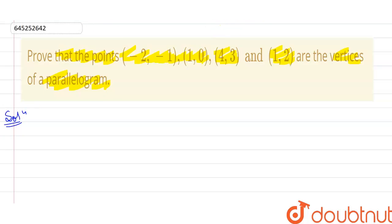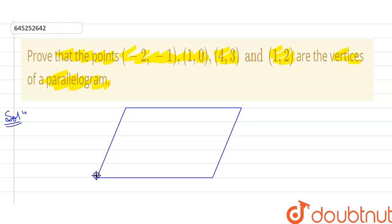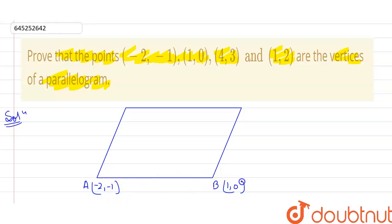Let's draw a parallelogram. This is my parallelogram. Now let's mark the points. A point is (-2, -1). B point is basically (1, 0). C point is basically (4, 3).